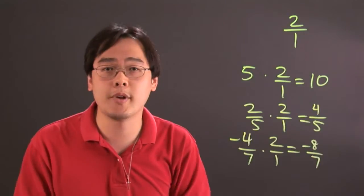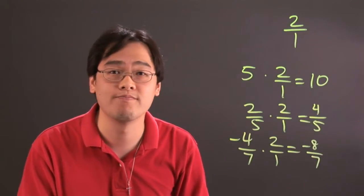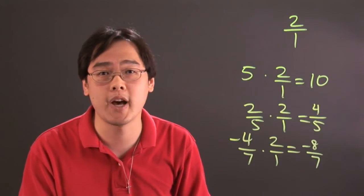So needless to say, when you're multiplying by a 2 to 1 ratio, you're just multiplying by the number 2. So I'm Jimmy Chang and that's how to multiply a 2 to 1 ratio.